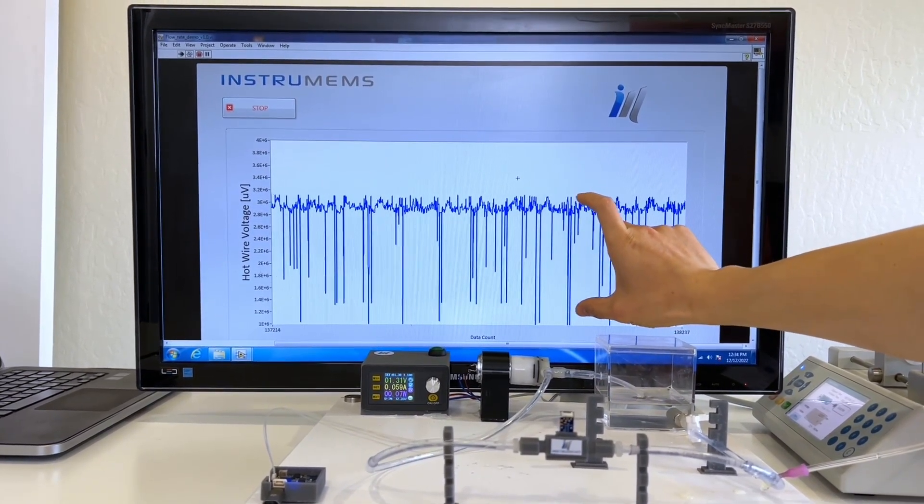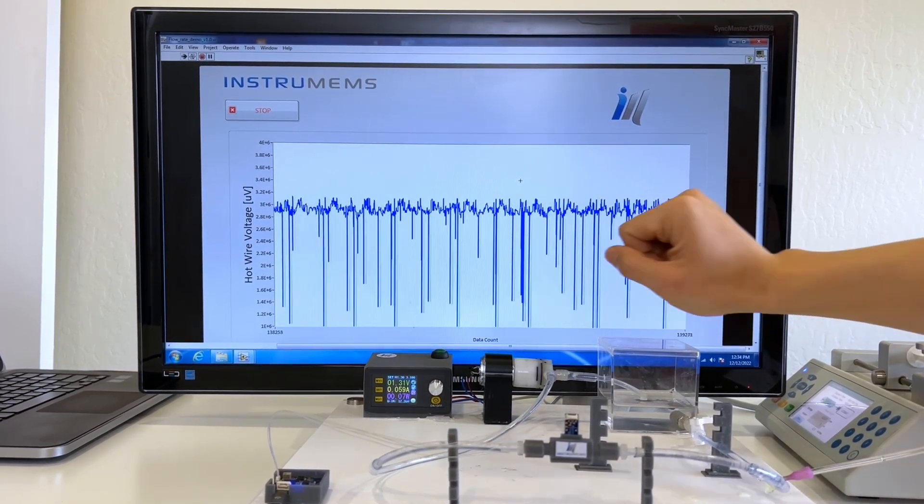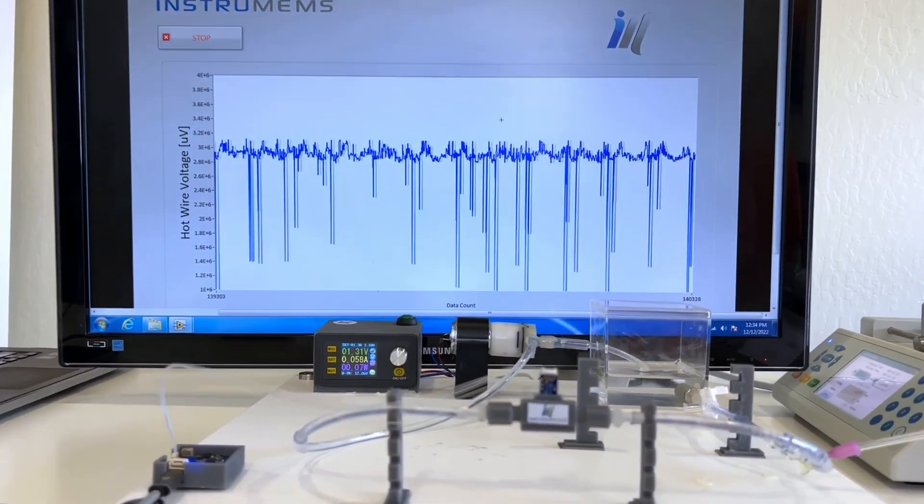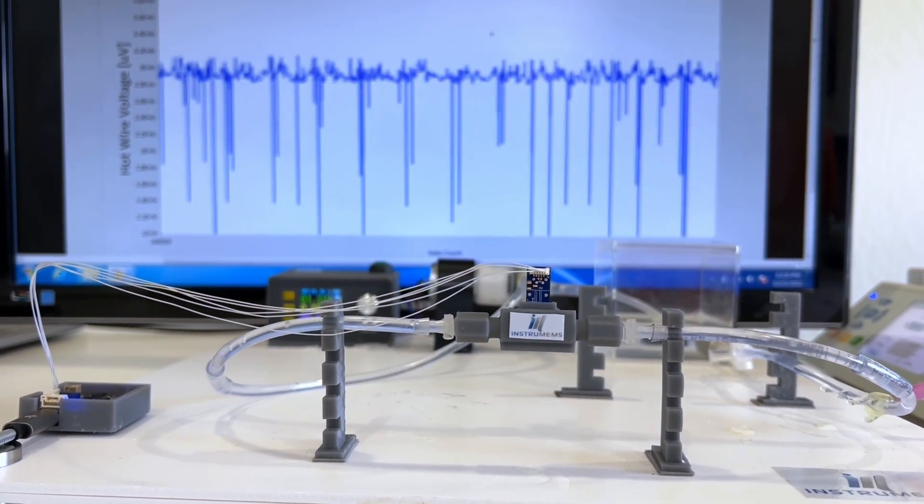Bubbles close together are detected due to the fast response time of the Instruments sensor. The width of the signal represents the bubble size. The present design of the sensor is capable of measuring a minimum size of 0.5 microliters.